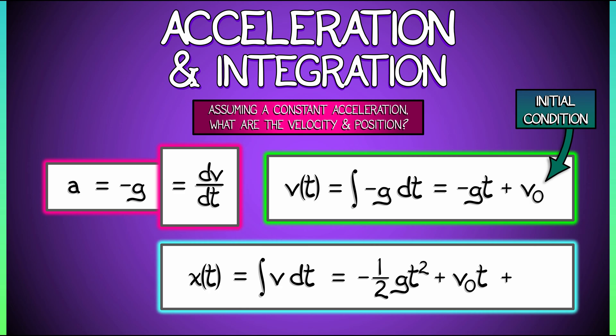But now we can interpret that plus c as what happens when we plug in t equals zero. We get the initial condition on the position. Call it x-naught. That is our answer. The position is minus one-half gt squared plus v-naught t plus x-naught.